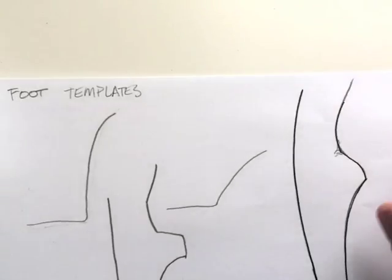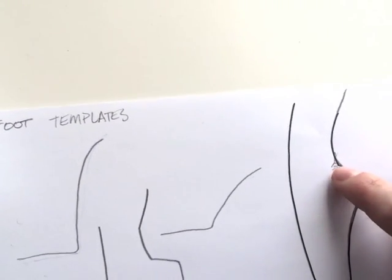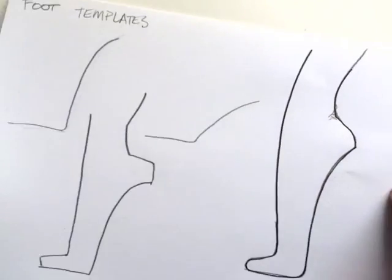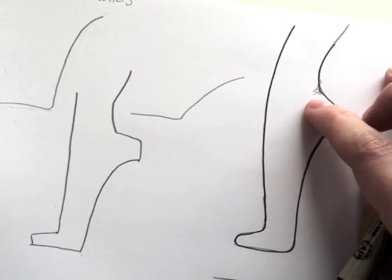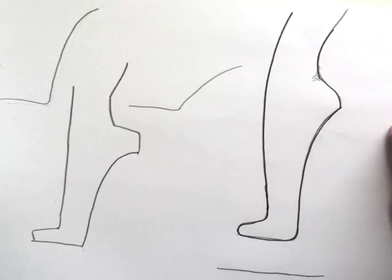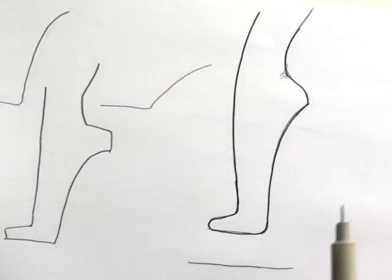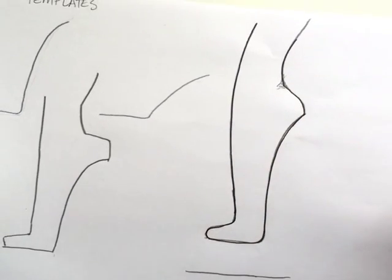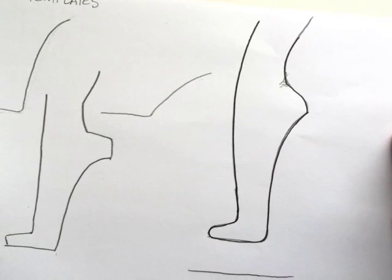Here's our foot template, and I'm not going to ink in this part because if you're doing like a slingback shoe or something, you won't want that stuff there. Then I just take my eraser and I erase all of the pencil lines.